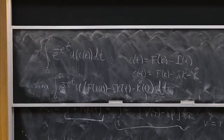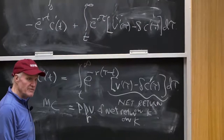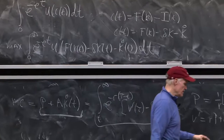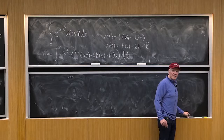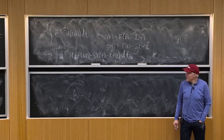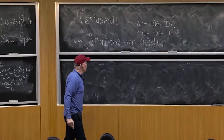So we maximize the integral from 0 to infinity of e to the minus rho t times u of [f(k(t)) minus delta k(t) minus k-dot(t)]. My choice variable is k-dot — how fast should I grow my capital stock at any date t? For the first-order condition, let's hold future k-dots constant. The perturbation is to increase k-dot today and keep that extra k forever.